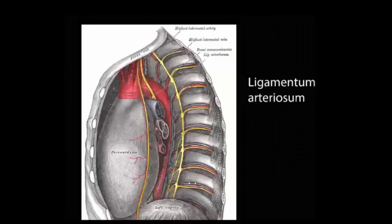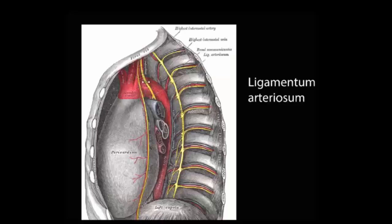If we look at the aorta from inside the chest on the left-hand side, we can see that the arch of the aorta runs backwards before coming to the left-hand side of the vertebral column and running inferiorly. Just after the left subclavian — we can just see the left subclavian at the top here with the vagus nerve running over it — just after the left subclavian, as it turns down, there's the ligamentum arteriosum.